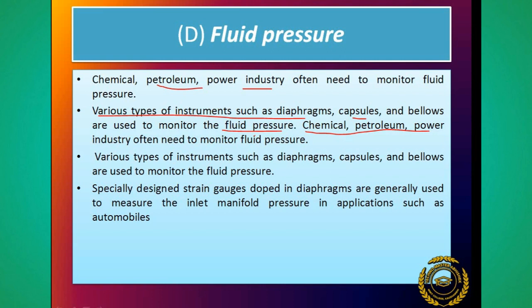Chemical, petroleum, and power industries often need to monitor fluid pressure. Various types of instruments such as diaphragms, capsules, and bellows are used - especially designed strain gauges doped in diaphragms. यहाँ पे भी strain gauges diaphragm में doped की जाती हैं और ये generally inlet manifold pressure को measure करने के लिए use होती हैं।